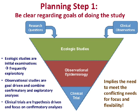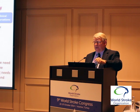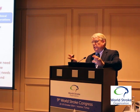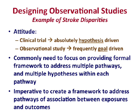Observational studies need to meet conflicting needs for both focus — what is the purpose of doing this study — and flexibility — the ability to look at a lot of things at one time. A clinical trial is absolutely hypothesis-driven, while observational studies are goal-driven. You need a formal framework with multiple pathways and multiple hypotheses within each pathway, designing a study that can investigate all the different paths from A to B.